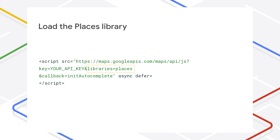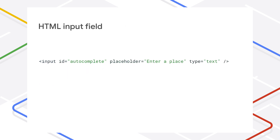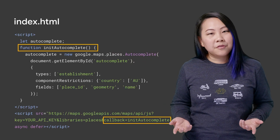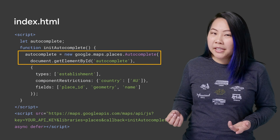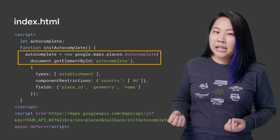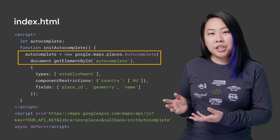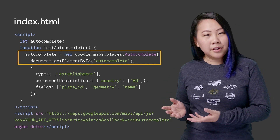First off, you'll need the places library loaded with the Maps JavaScript API. Add an HTML text input field, which you can style however you like. Now give that input field superpowers by making it a place autocomplete input field. In the callback function from loading your Maps JavaScript API, initialize a new place autocomplete service and attach it to the HTML element you created earlier.